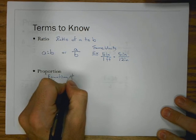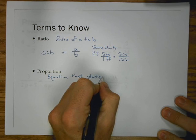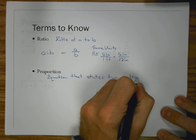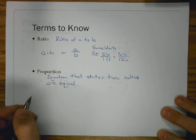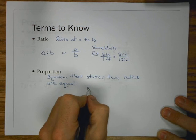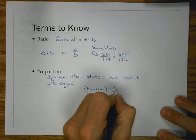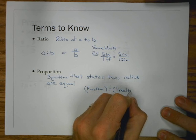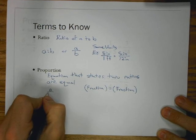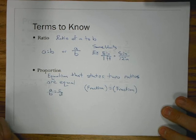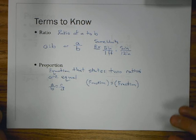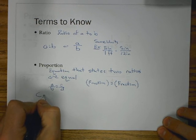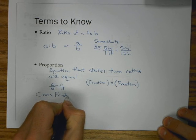Now, a proportion is an equation that states two ratios or fractions are equal. So, a ratio is a fraction, a proportion is a fraction equal to a fraction. So, if I said A over B equals C over D, that would be a proportion.